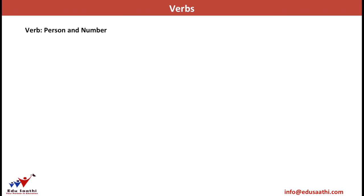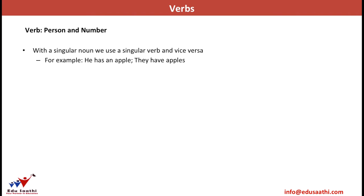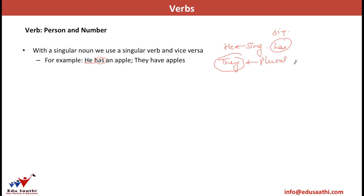The choice of verb also depends on the person and number of the subject. If a sentence has a singular subject, the verb that follows must also be singular. But if the sentence has a plural subject, the verb must also be plural. For example, 'He has an apple' — 'he' is singular, so we take the singular verb 'has.' Likewise, 'They have apples' — 'they' is plural, so we take the plural verb 'have.'